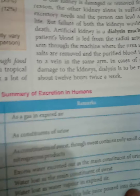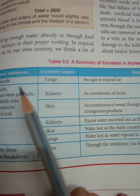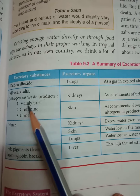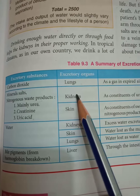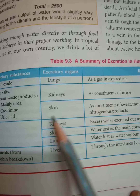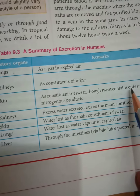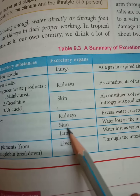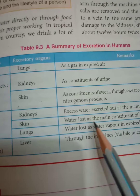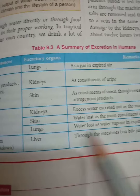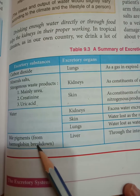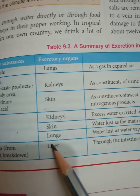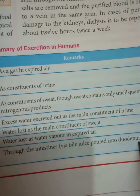The summary of excretion in humans: carbon dioxide is excreted through the lungs as a gas in expired air. Nitrogenous waste — especially urea, creatinine, and uric acid — is expelled through the kidneys as urine, or through the skin as sweat, though sweat contains only a small quantity of nitrogenous waste. Water is expelled through the kidneys, skin, and lungs. Bile pigments — bilirubin and biliverdin — result from the breakdown of RBCs in the liver and are expelled through the intestine via bile juices poured into the duodenum, and then out as fecal matter.